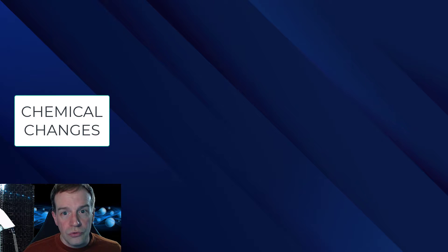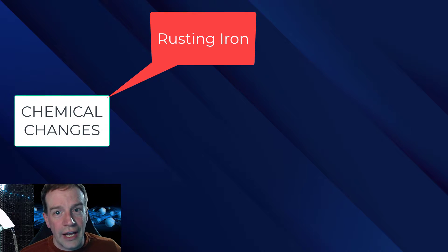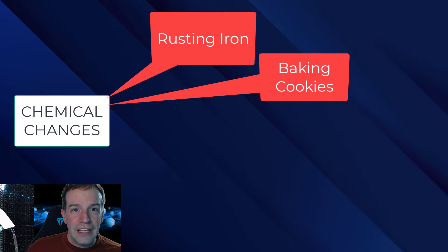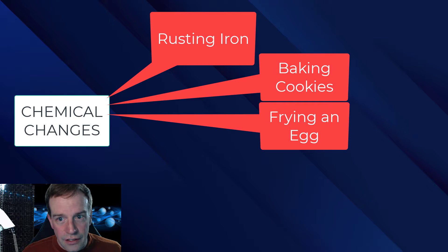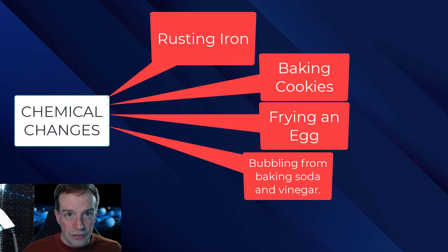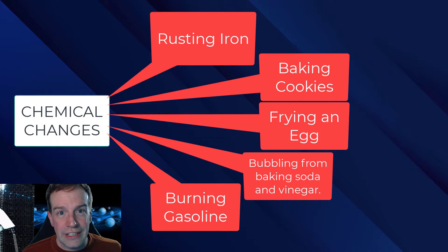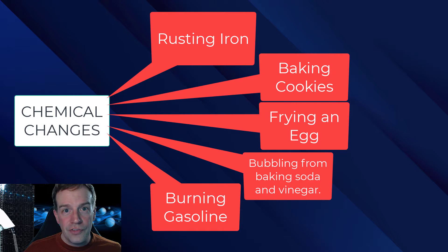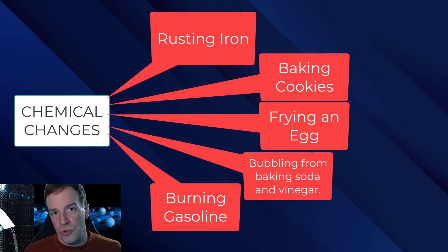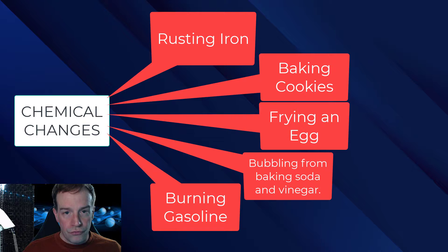Examples include rusting iron, baking cookies, frying an egg, bubbling when baking soda and vinegar are mixed together, and burning gasoline. In all of these cases, a new substance with new properties is formed.